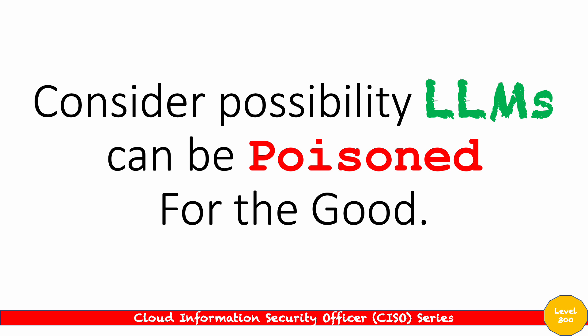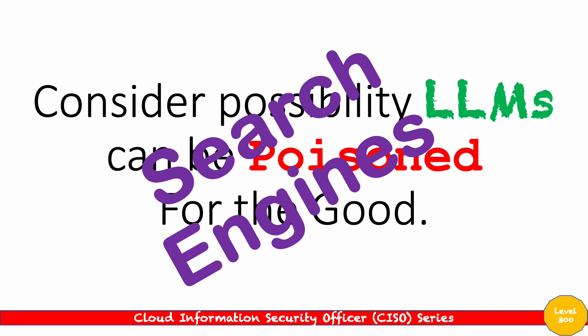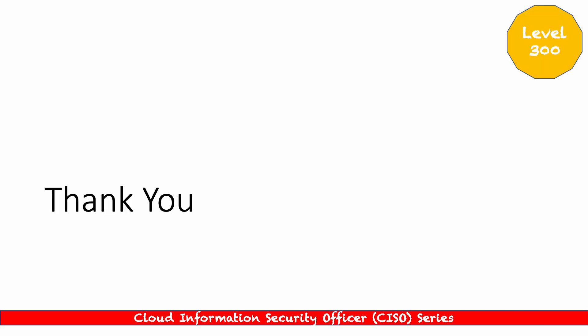Consider the possibility that large language models can be poisoned for the good. Previously we talked about all the different ways to poison something for a not-so-good approach — as a vulnerability or an attack. But there are scenarios where we want to poison the actual large language models. A specific example is search engines, where we want to favor specific keywords and responses due to marketing, advertisements, etc. That's a good example where an LLM can be poisoned for the good. And that concludes today's module.